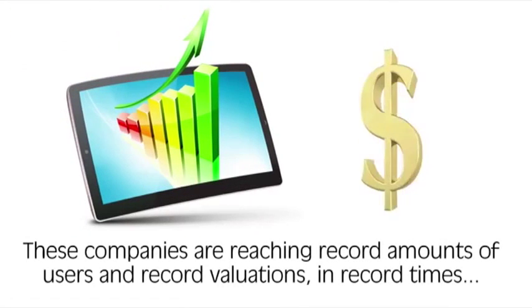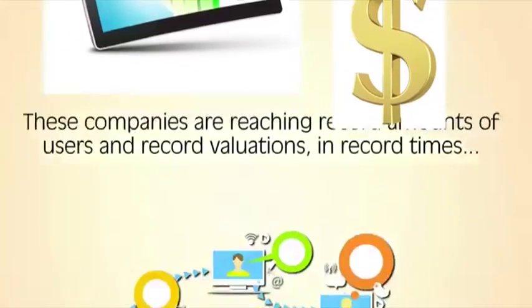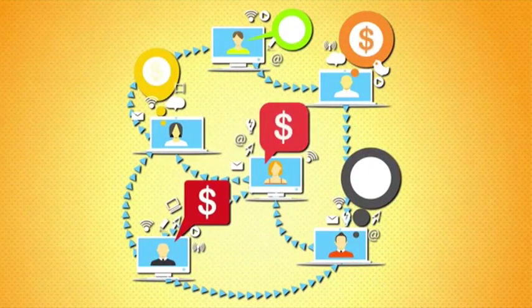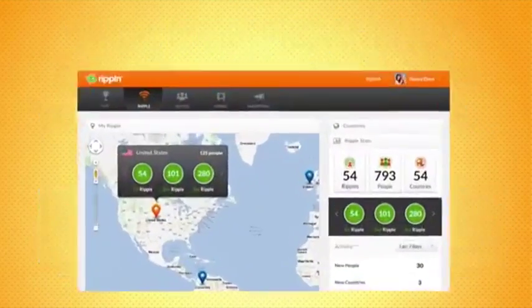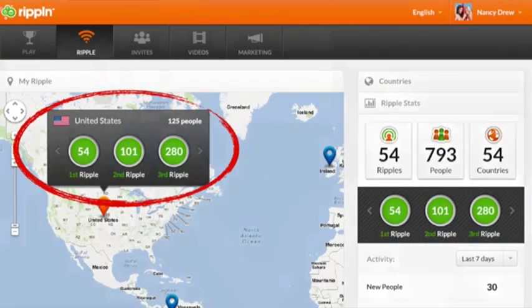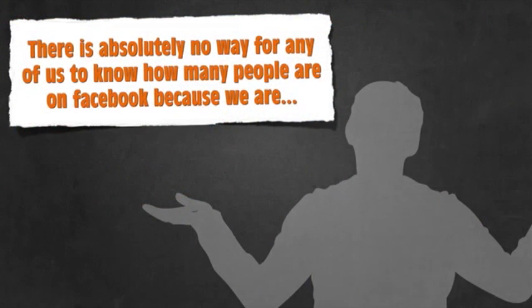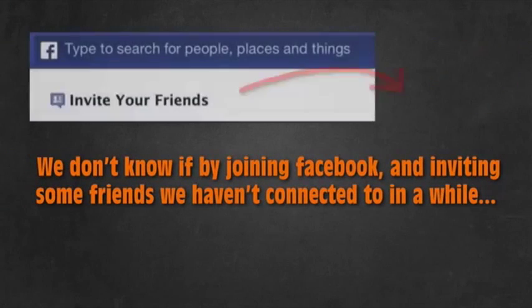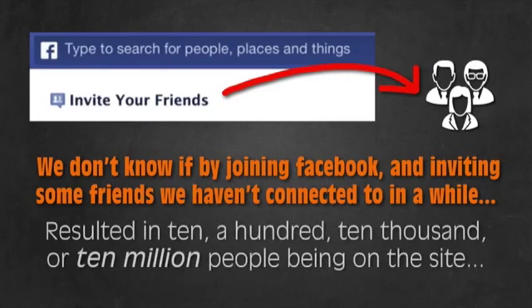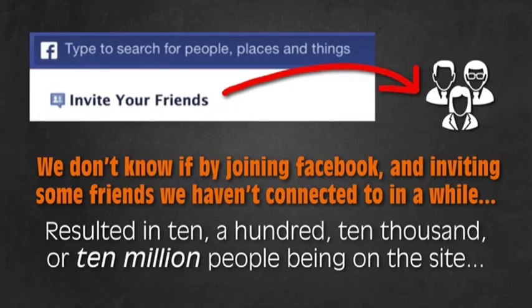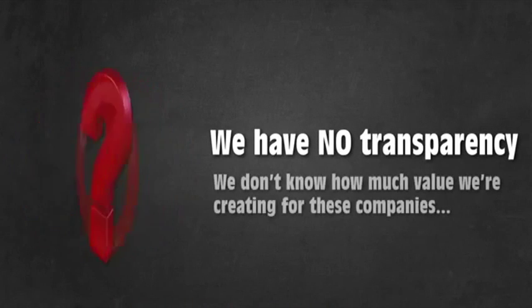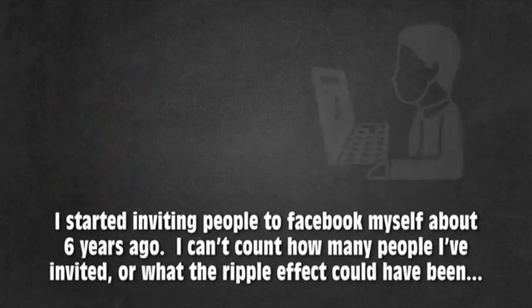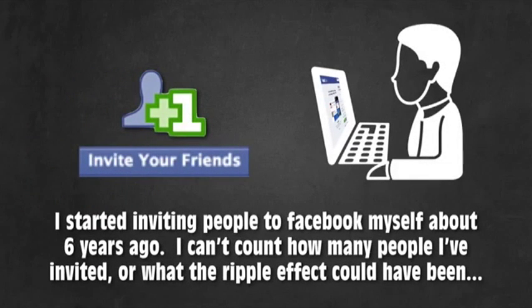But what if you actually knew how much your word-of-mouth sharing was worth? What if transparency actually existed in how your social graph spread so you could see what your ripple effect on the world actually is? Well, currently, there's absolutely no way for any of us to know how many people are on Facebook because we are. We don't know if by joining Facebook and inviting some friends resulted in 10, 100, or 10,000, or even 10 million people being on the site. We have no transparency. I started inviting people to Facebook myself about six years ago. There honestly might have been 1 million people using the site because I was.